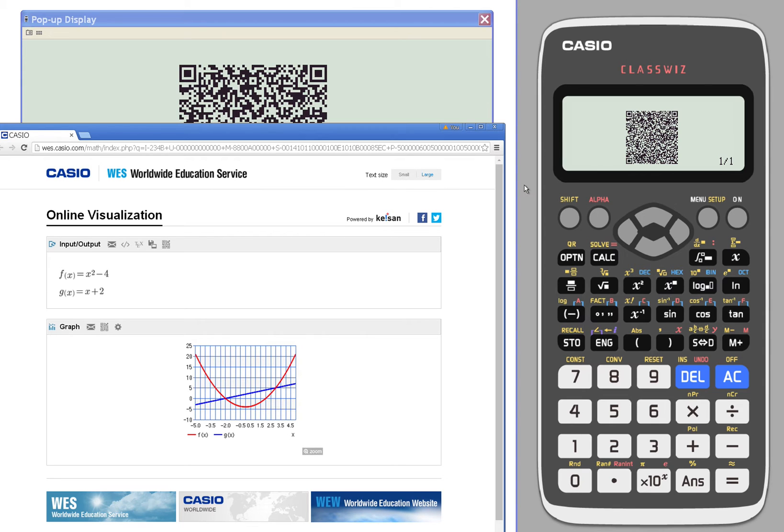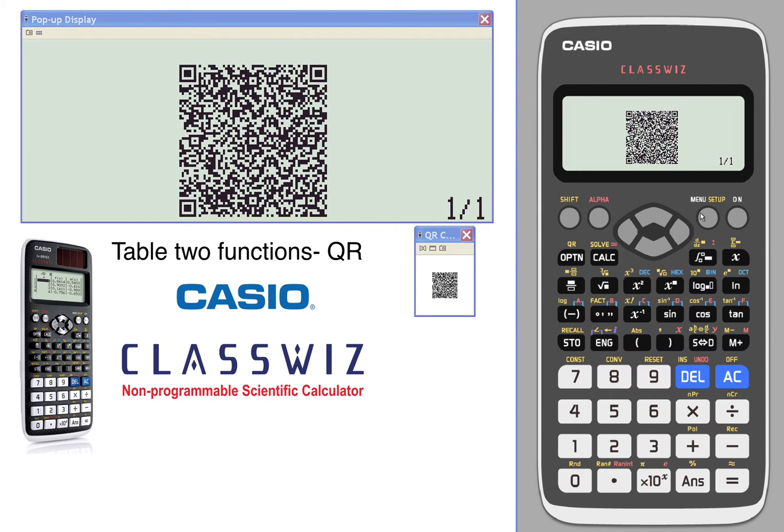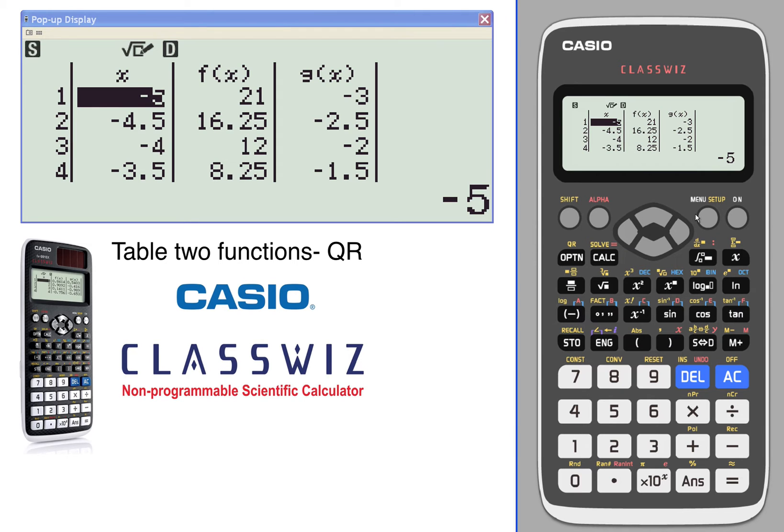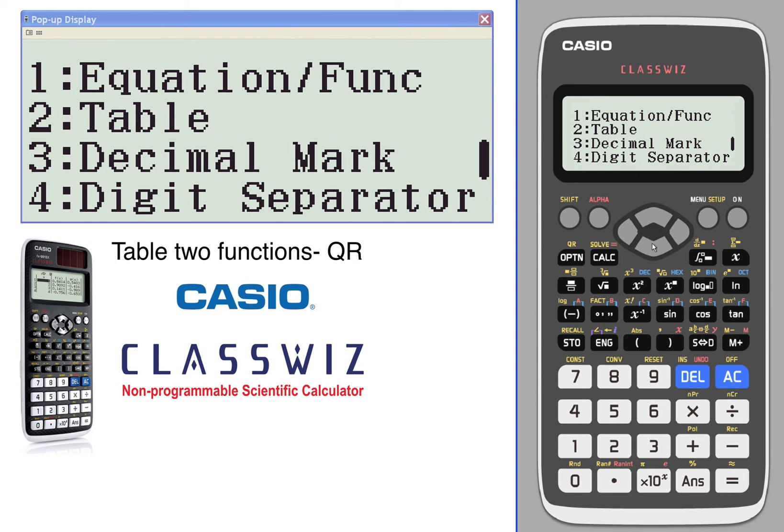Let's take a look at the same thing. This time we're going to do it with a single function, so we're going to get rid of that. Single function this time, so we're AC out of there. Shift setup, let's change our table to be a single function.